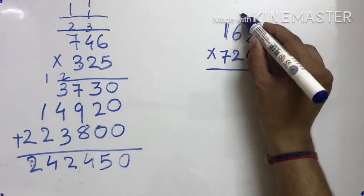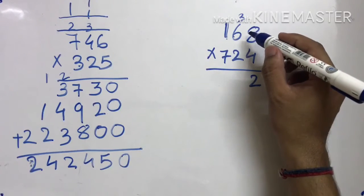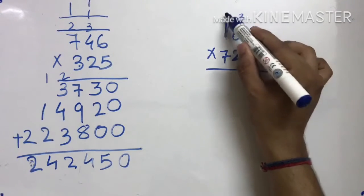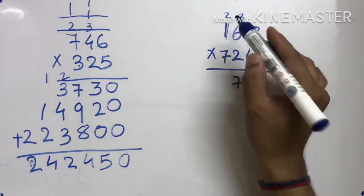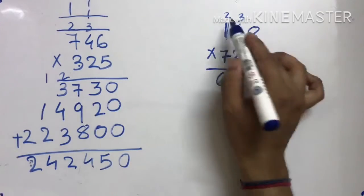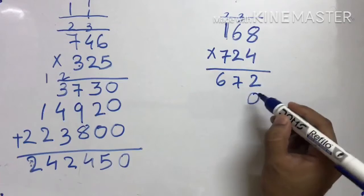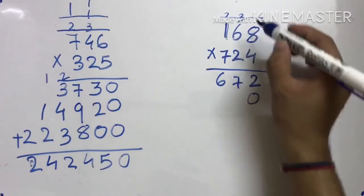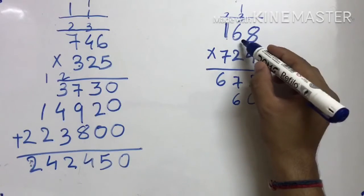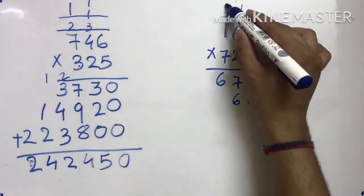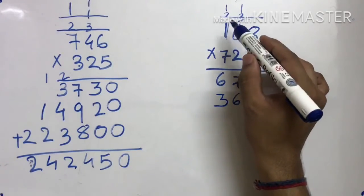4 × 8 = 32. 4 × 6 = 24, 24 plus 3 = 27. 4 × 1 = 4, 4 plus 2 = 6. Abhi 2nd number — carry cut. 2nd number multiply karne se pehle last number ke neeche 0 daalna hai. 2 × 8 = 16. 2 × 6 = 12, 12 plus 1 = 13. 2 × 1 = 2, 2 plus 1 = 3.